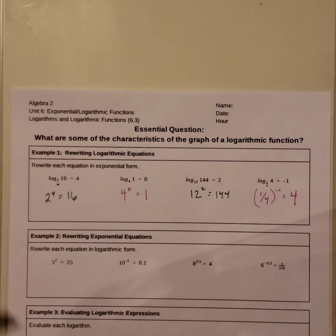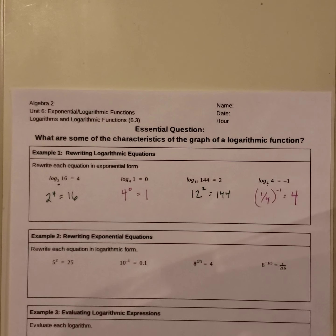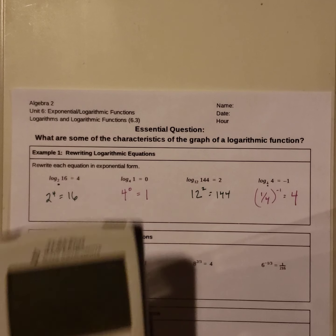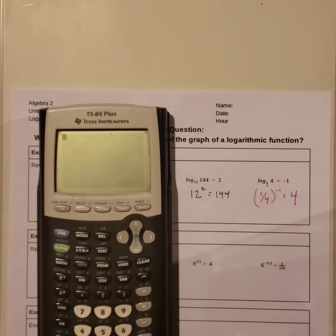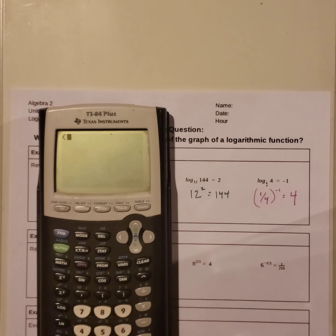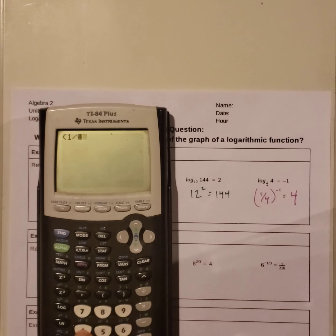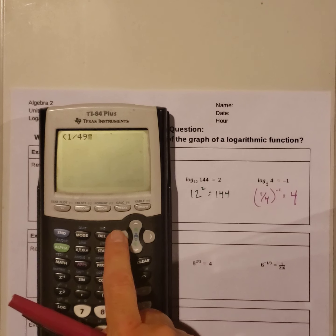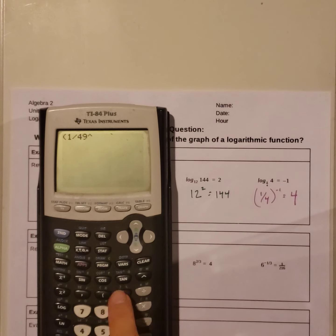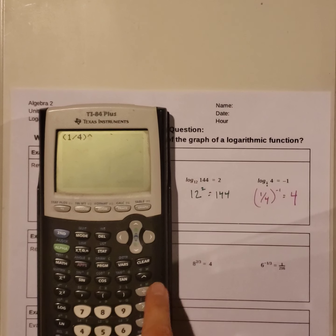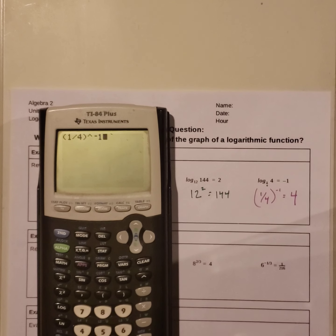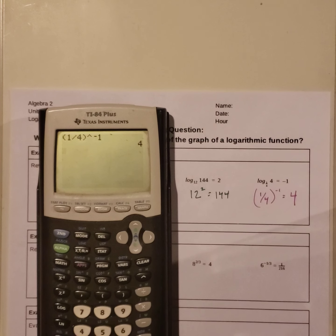If you're not sure about that one, double check it in your calculator. We have 1 divided by 4, in parentheses, raised to the negative 1, hit enter, and it gives you 4.